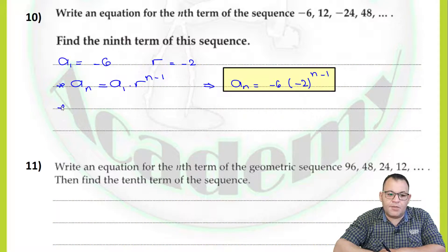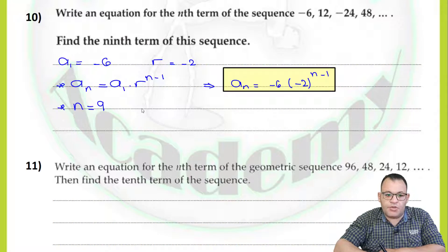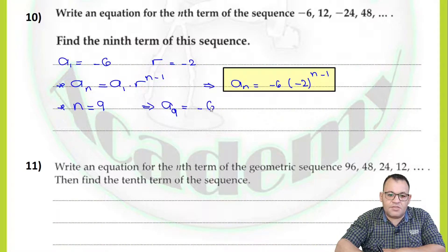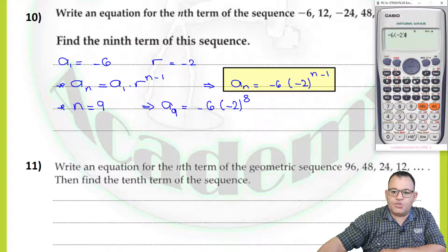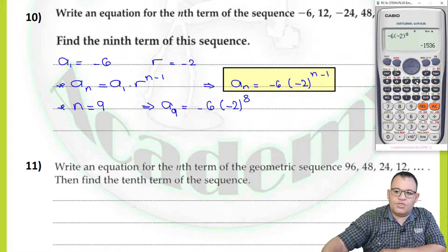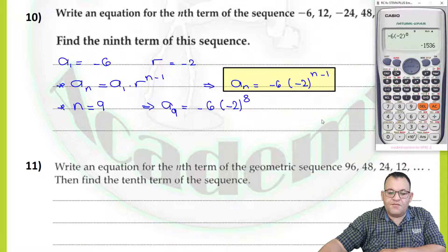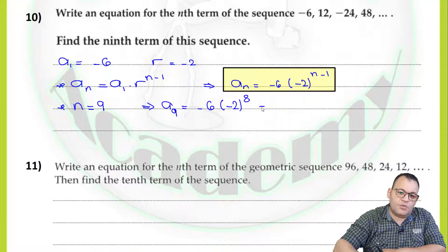Now we need to find the ninth term, meaning n equals 9. So a9 equals negative 6 times negative 2 to the power 9 minus 1, which equals negative 2 to the power 8. That gives negative 6 times negative 2 to the power 8, which equals negative 1536. The answer is negative 1536.